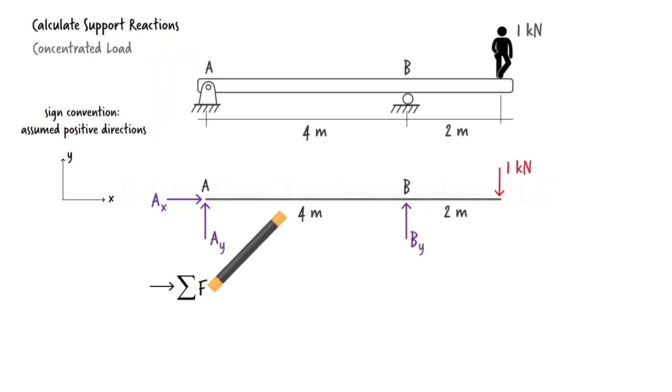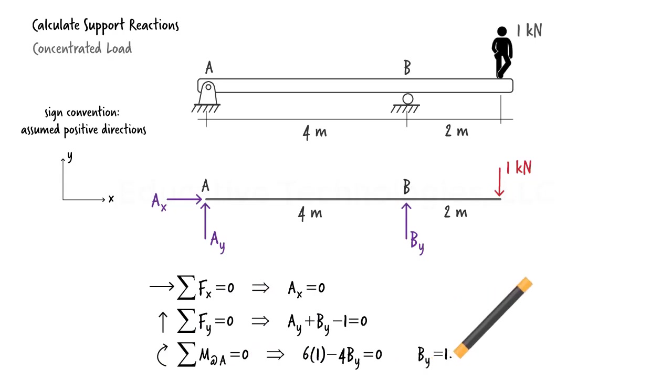Now we write the three equilibrium equations. Solving the last equation, we get By. The second equation gives us Ay, and from the first equation, we can see that Ax is 0.